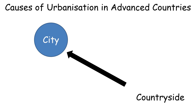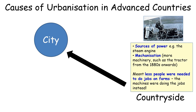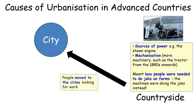This means people were moving from the countryside to the city in large quantities. In the countryside, sources of power such as the steam engine were being invented and there was much more machinery used. This extra machinery and power meant that fewer workers were needed, so people were losing their jobs in the countryside and moving to the cities to try to find work.